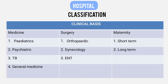On a clinical basis, we can classify hospitals. The types include Medicine, Surgery, and Maternity. Under Medicine: Pediatric Hospital, Psychiatric Hospital, TB Hospital, and General Medicine Hospital. Under Surgery: Orthopedics, Gynecology, and ENT. Under Maternity: Short-Term and Long-Term.